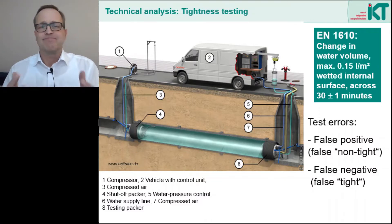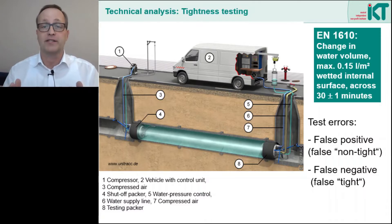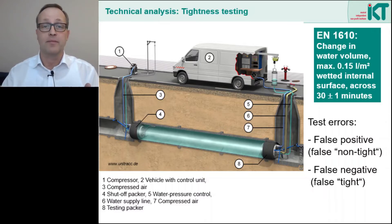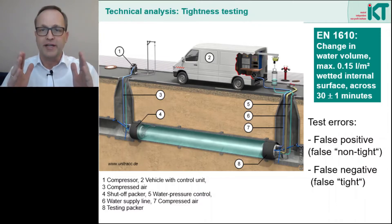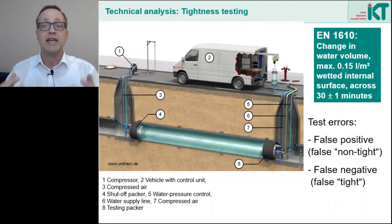So how can such errors occur? There are many causes. A tight sewer section may not pass the test because the test equipment itself is leaky, or because there is water creep at the shutoff packers. There can also be defects in the venting, so that there is still air in the tested section that is compressed. False negative results, on the other hand, are rarer but still possible. For example, if the shutoff packer itself is sitting on a leak, the leak will not be detected. If the groundwater level is high, the groundwater can generate so much counter-pressure that the pipe does not lose any water during the test — this would also be a false negative.